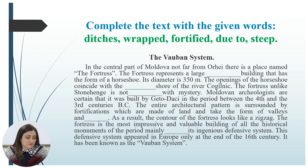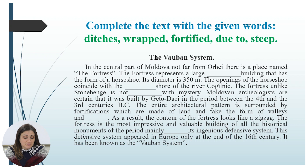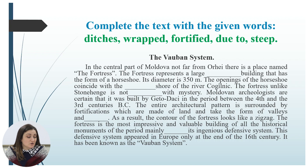As a result, the contour of the fortress looks like a zigzag. The fortress is the most impressive and valuable building of all the historical monuments of the period, mainly due to its ingenious defensive system. This defensive system appeared in Europe only at the end of the 16th century. It has been known as the Vauban system.